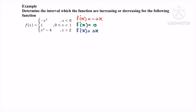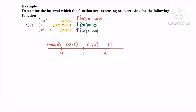Next, we find the intervals. The intervals are already given; we just need to identify whether each is increasing or decreasing. Step three: set up a table. We locate the critical values 0, 1, and 2, giving us the intervals: negative infinity to 0, 0 to 1, 1 to 2, and 2 to infinity.